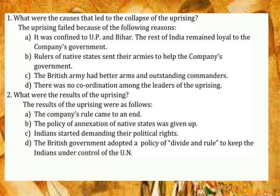What were the causes that led to the failure of the uprising? The uprising failed because of the following reasons: it was confined to UP and Bihar, and the rest of India remained loyal to the company's government. Rulers of native states sent their armies to help the company's government. The British Army had better arms and outstanding commanders. There was no coordination among the leaders of the uprising.